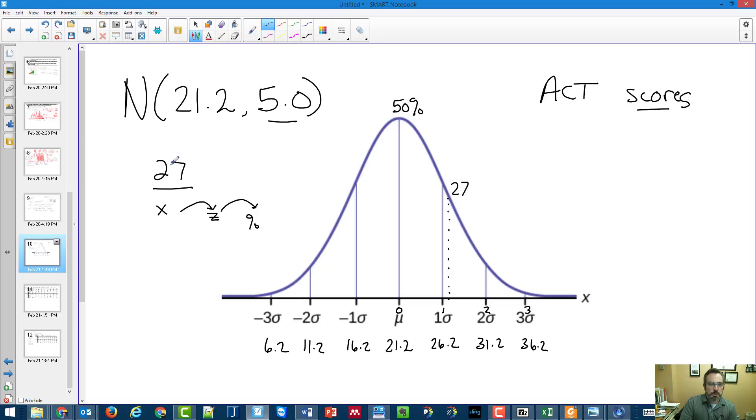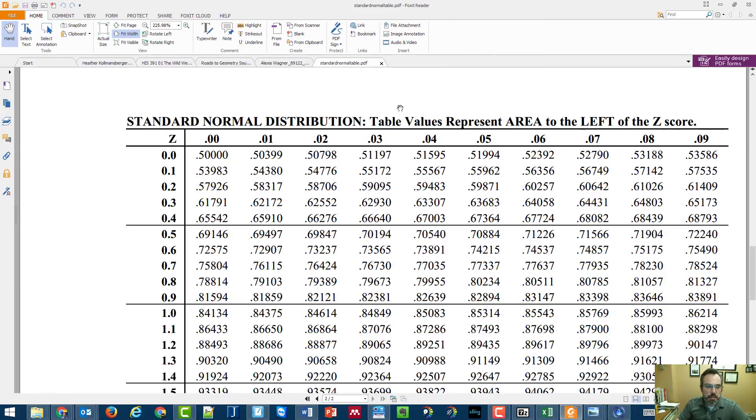So notice I'm starting with an x. I have to go to a z-score and then use that z-score to go to a percentage. The idea with the formula is never going to change. In this case, I'm looking for a z-score because I have the x. My x is 27. So 27 minus 21.2 divided by standard deviation of 5.